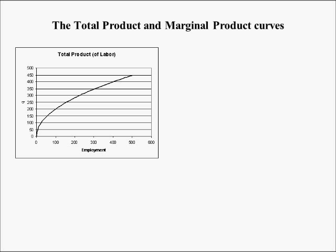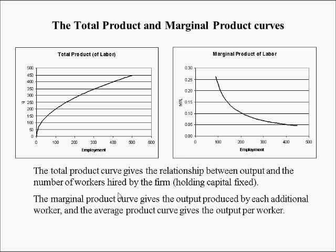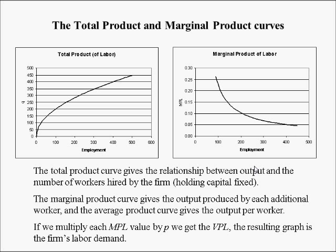This is what the total product curve looks like — Q with capital equal to 400 as we raise labor. Down here, adding one unit of labor gives a huge increase in output; higher up, adding one unit gives a smaller increase. The total product curve gives the relationship between output and workers hired, holding capital fixed at 400. The marginal product curve gives output added by each additional worker; the average product curve gives output per worker. We think on the margin, not on the average.